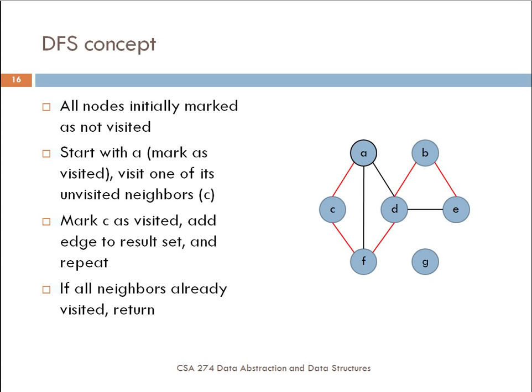You then mark that node as visited and then add the edges to the result set and then repeat. If you ever get to the point where you're trying to traverse to a node that's already been visited, you just skip that node and move on to the next edge. When you get to the point where you've visited all the neighbors of a particular node, you then back up until you either are back to the beginning or you back up to the next node that you can actually visit.